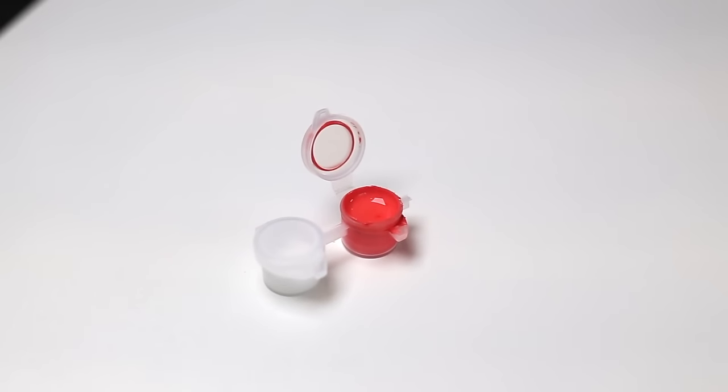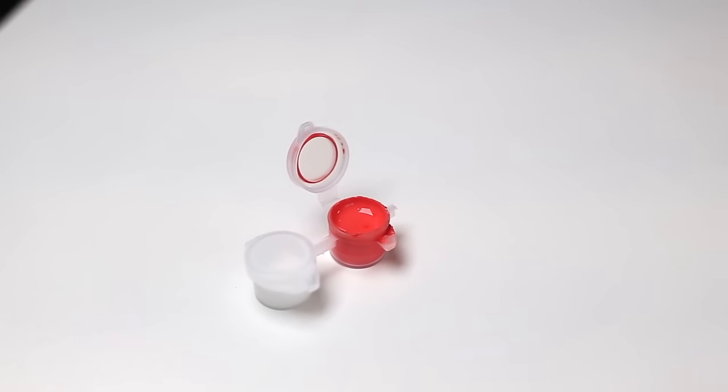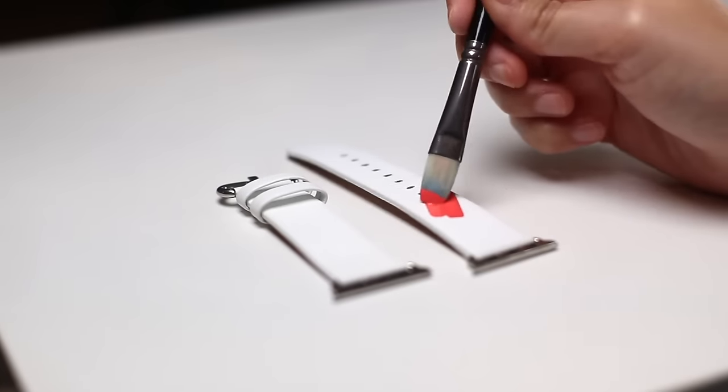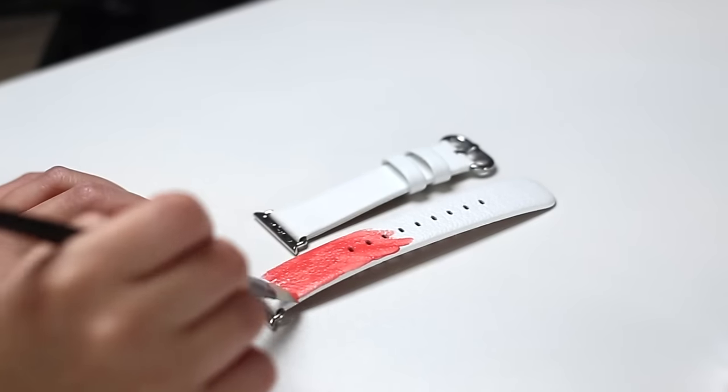Alright, moving on to our last watch, I'm going to start out with my red mixture, which is a mix of chili red, red, and flat white. I'm going to apply about three to four coats of this until the band is fully saturated.